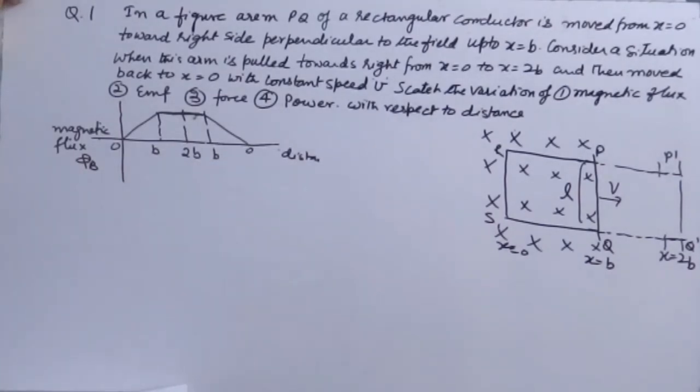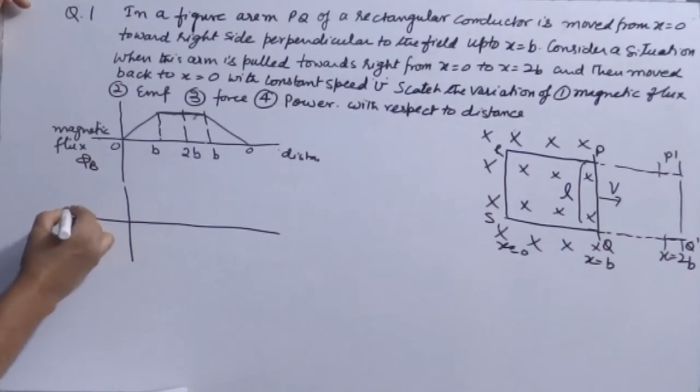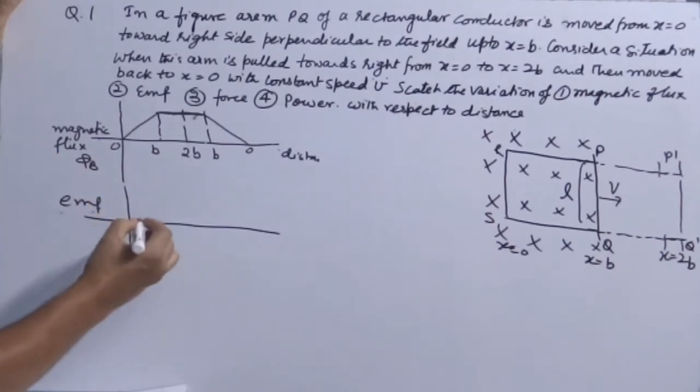On the basis of this, on the same scale, you can plot other graphs. EMF first, you can easily see EMF with respect to this. Now EMF induces always in opposite direction to the rate of change of flux. So up to B, EMF induced will be in opposite direction, and the value will be minus BLV.